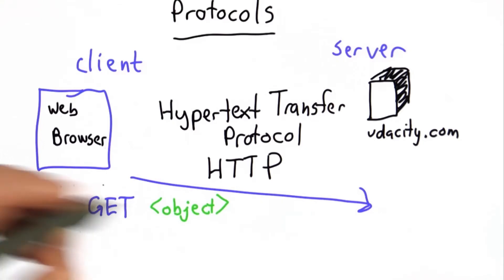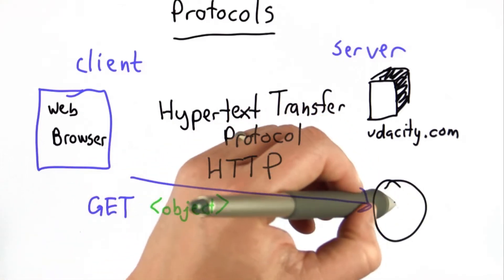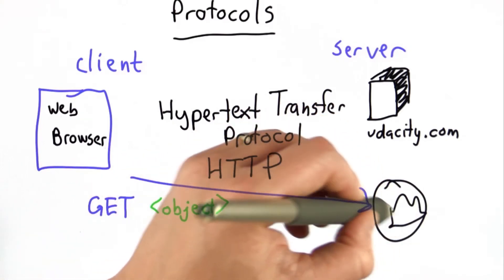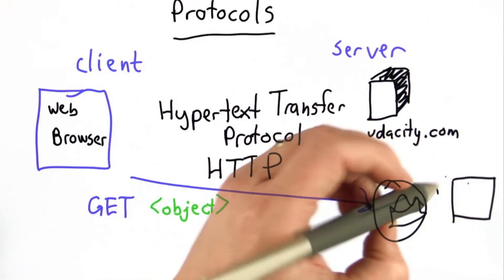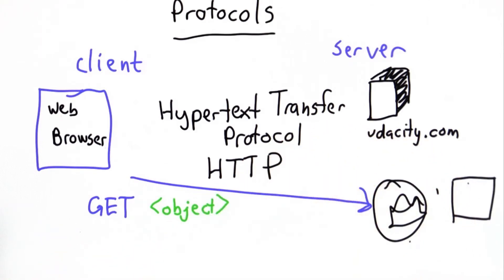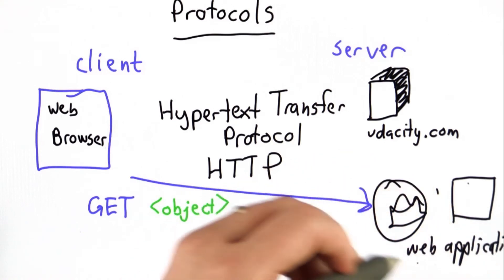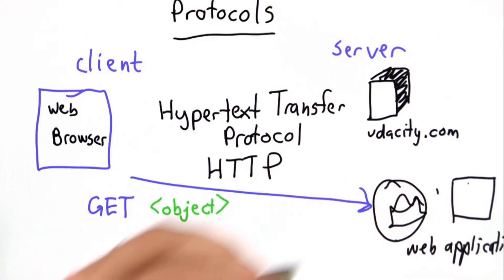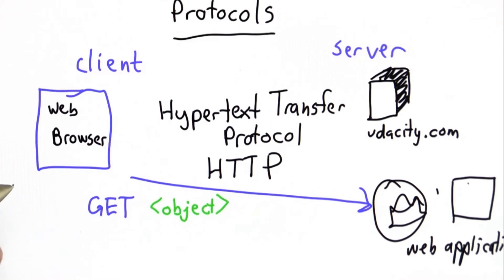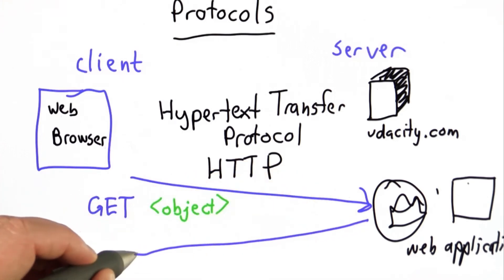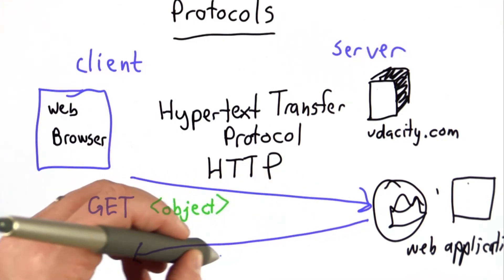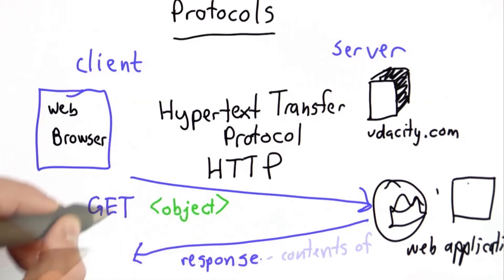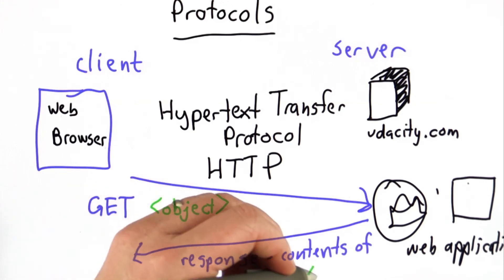The server will get that message, run some code on it, find the file that was requested, and might run some more code to get the result. Take the web application course to understand more about what the server does. But what matters to the client is what happens after that — the server sends back a response, which is the contents of the requested object.